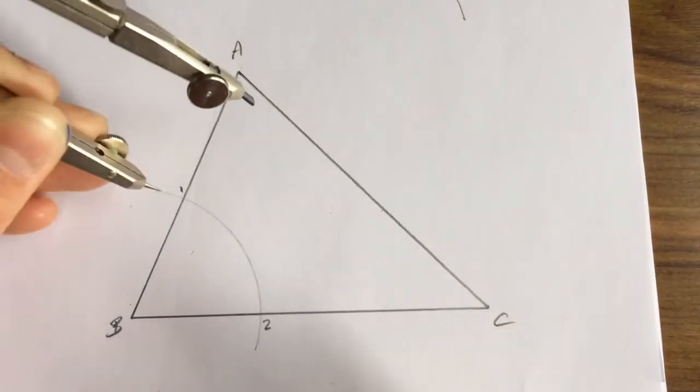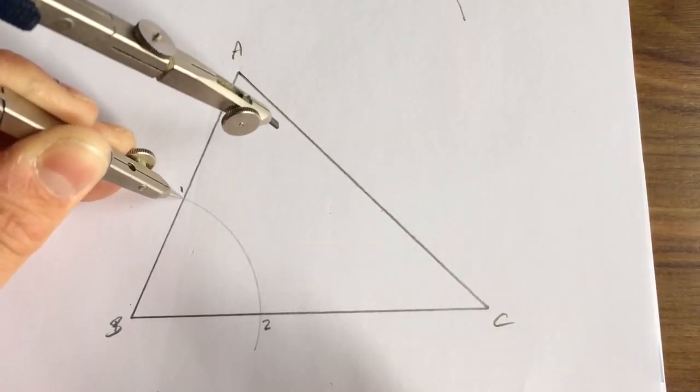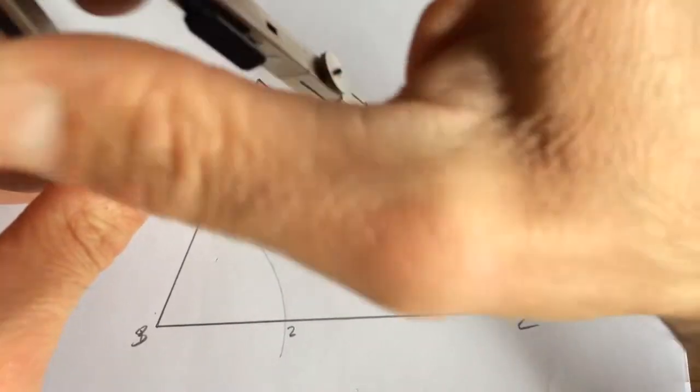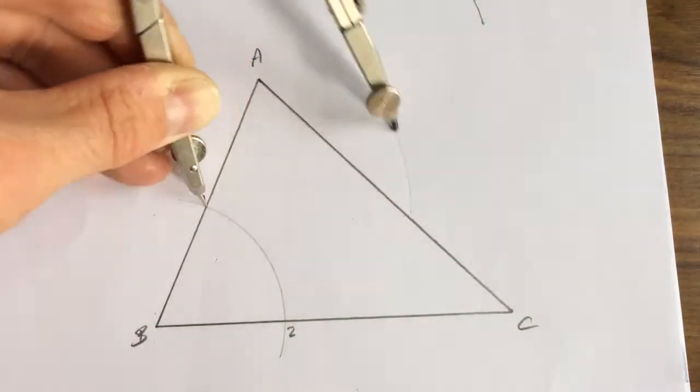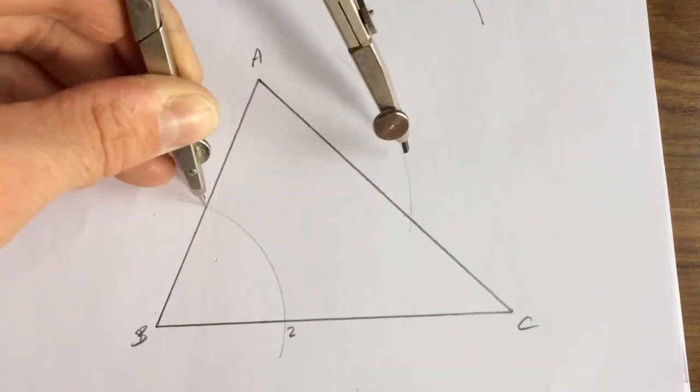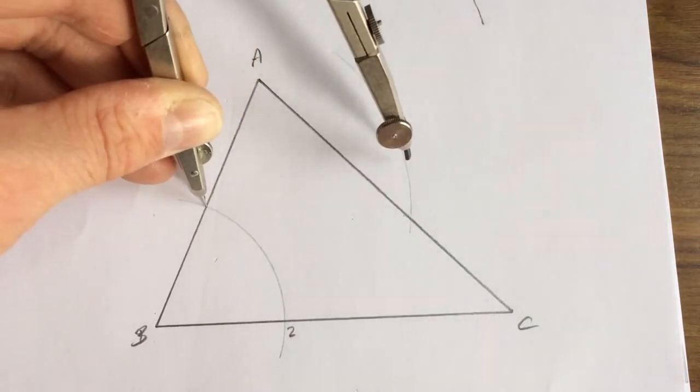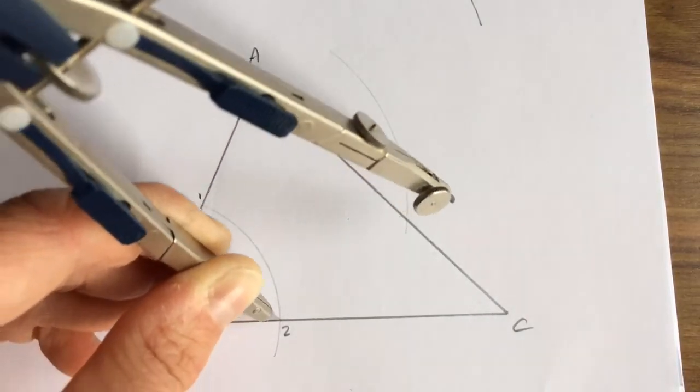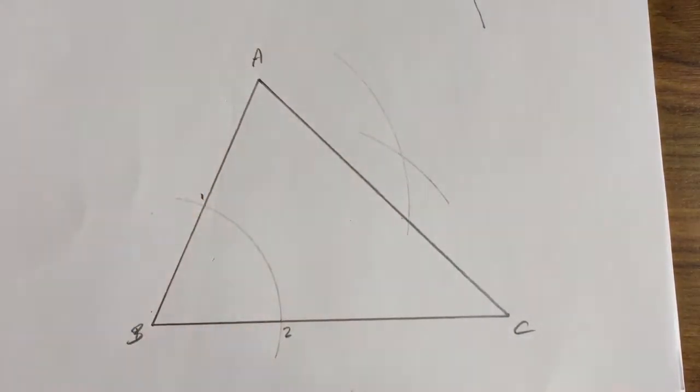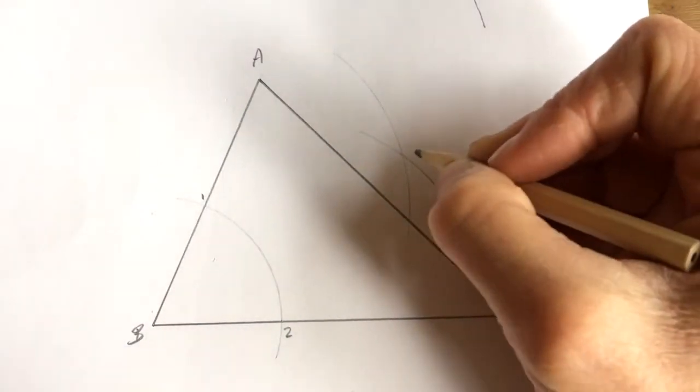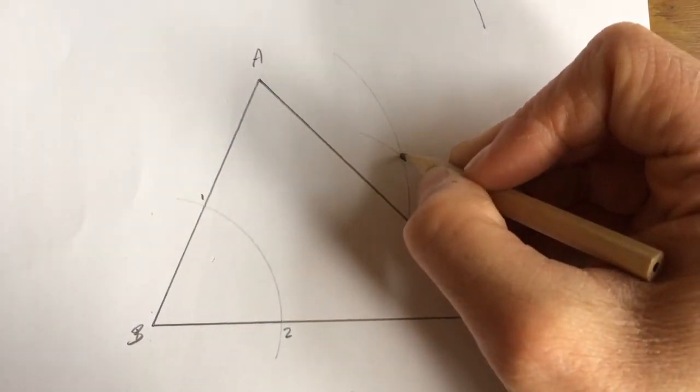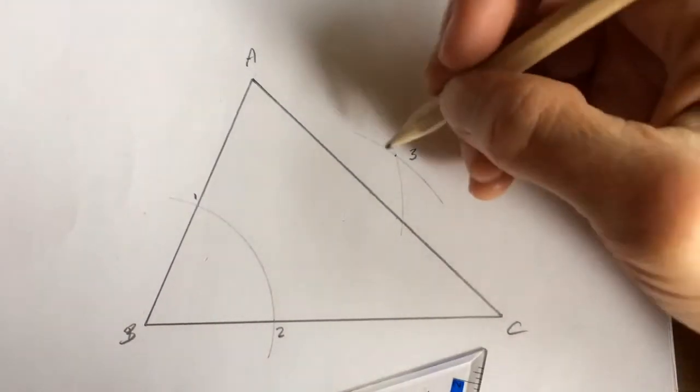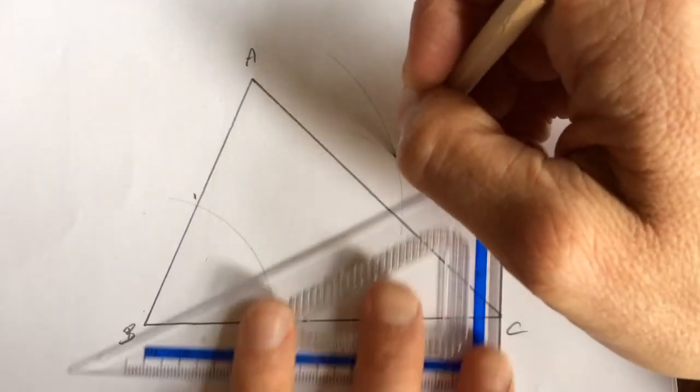I then place my compass at one and extend it out a little bit, and I'm going to swing an arc somewhere over here. Now keeping the radius exactly the same, I transfer the point across to position two and swing an arc the other way. Where the two arcs cross each other is position three, and I'm just going to connect that back to B.